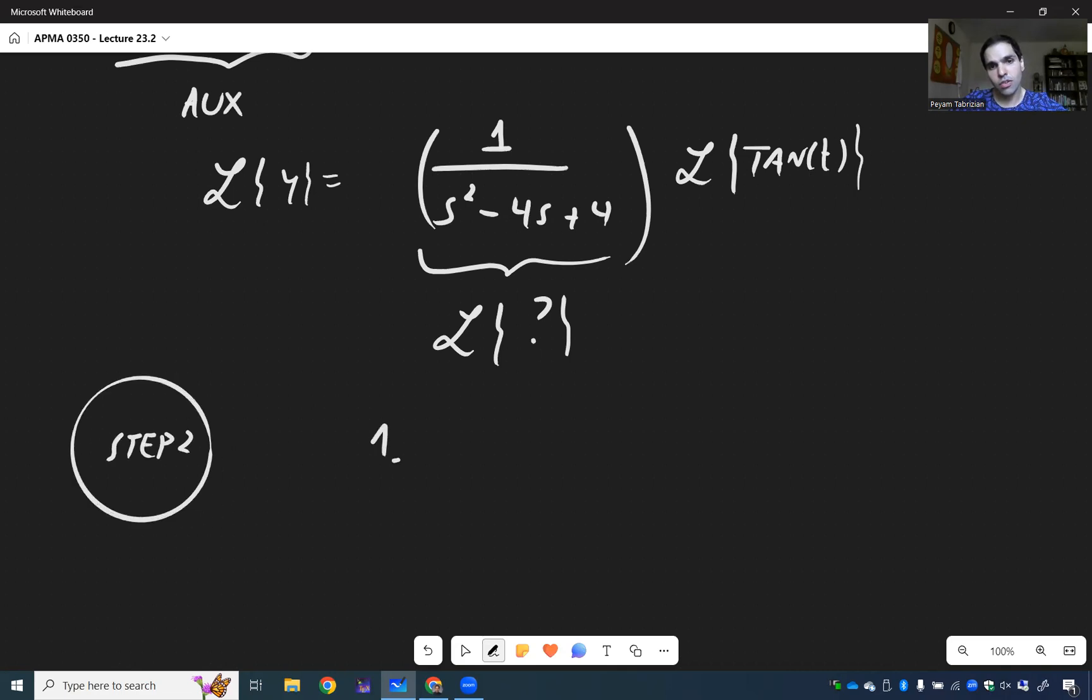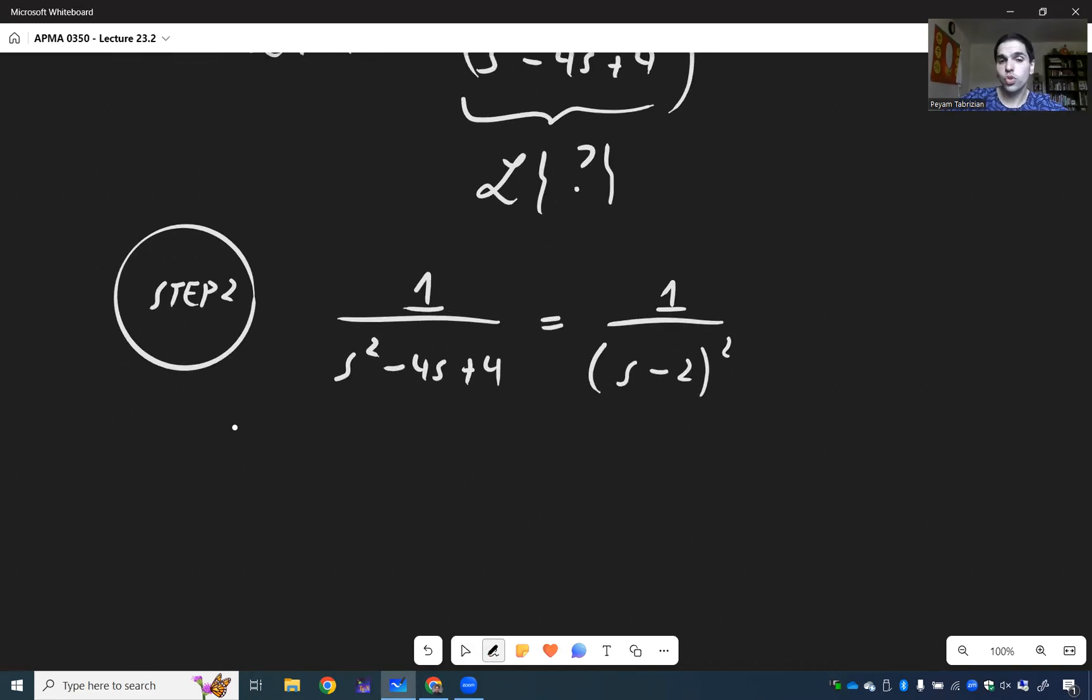Not too bad, so let's look at 1 over S squared minus 4S plus 4. That is 1 over S minus 2 squared. As usual, this is a shift now. So this is a shifted version by 2 units of 1 over S squared, which remember is the Laplace of t.